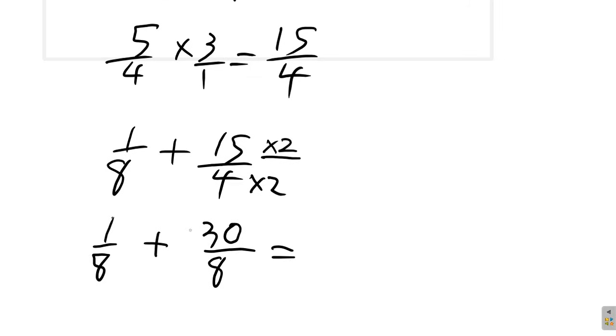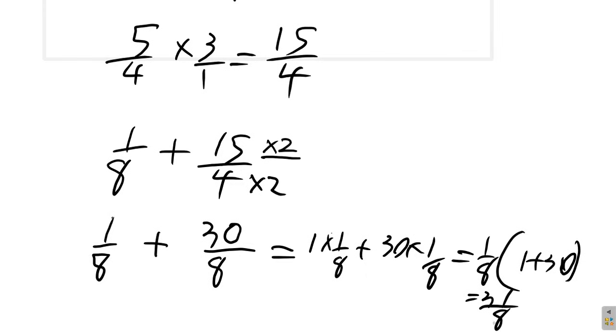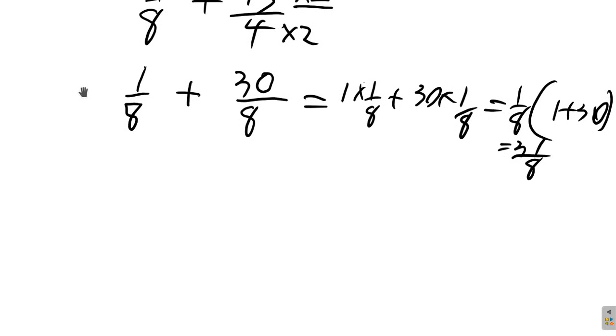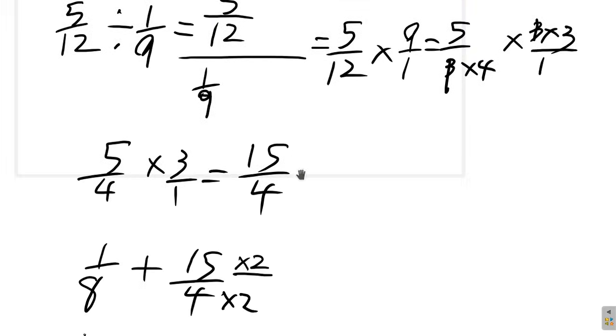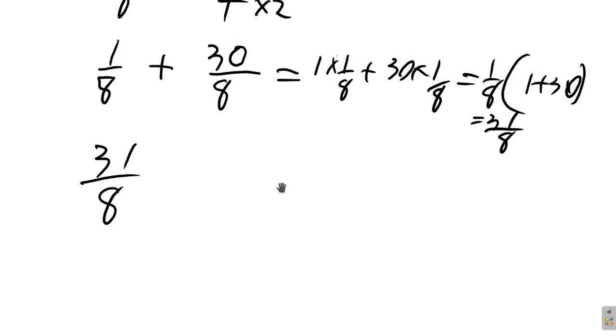Now, 1 eighth plus 30 eighth. It's somewhat like this: 1 times 1 eighth plus 30 times 1 eighth. So it's as if you're saying 1 eighth outside the bracket, 1 plus 30. So it's 31 eighth. 31 over 8. Like you just add the numbers up top and put it over 8. So it's 31 eighth. So you have 31 eighth here. And you are to give the answer in the exact form, which will be this. So it's 31 eighth for that part.